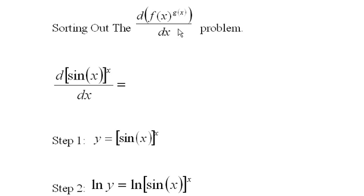We're going to look at taking the derivative of f of x to the g of x power, where neither f nor g are constants. The example we're going to use is the sine of x taken to the x power with respect to x.